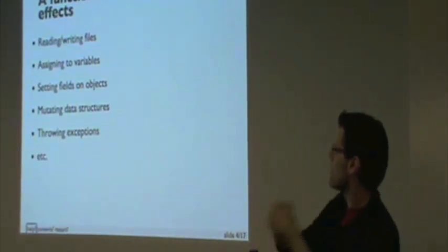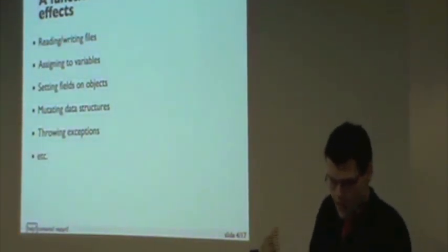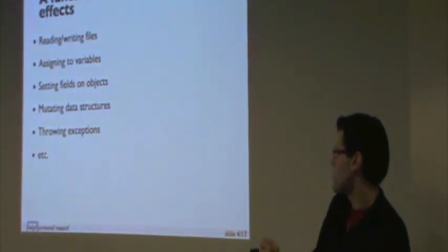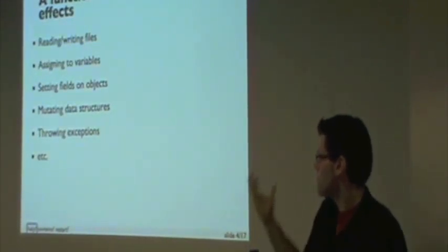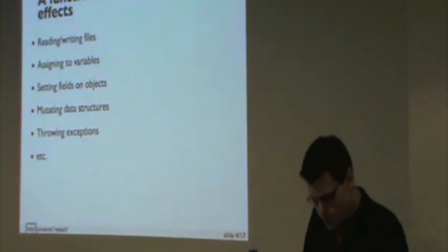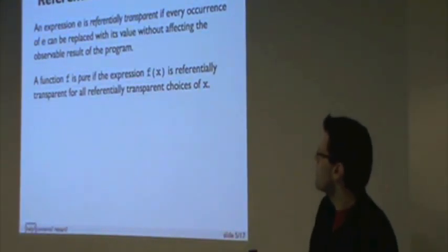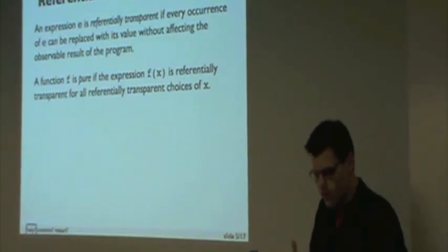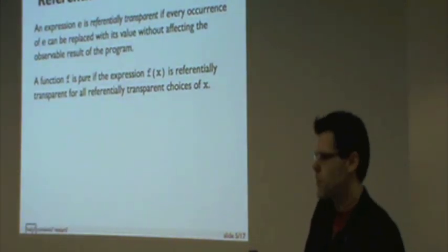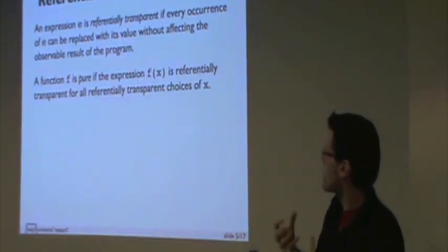If we give it an A, it can only give us a B. It can't do things like reading or writing files, assigning to variables, mutating data structures, throwing exceptions. Even the 'new' keyword is a side effect. More positively, what that means is that a function is pure. And what that means is that an expression involving that function is referentially transparent.